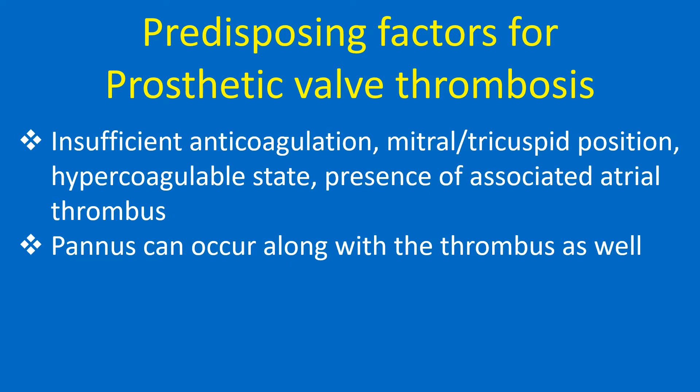Predisposing factors for prosthetic valve thrombosis include insufficient anticoagulation, mitral or tricuspid position, hypercoagulable state, presence of associated atrial thrombus, and pannus, which can occur along with the thrombus as well.